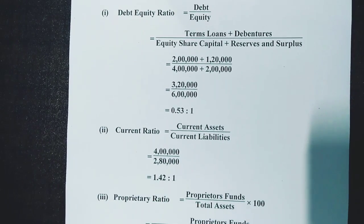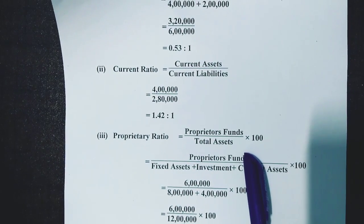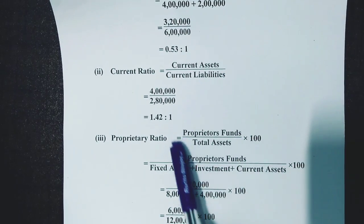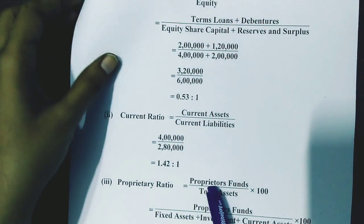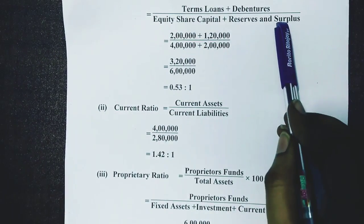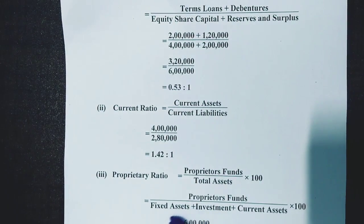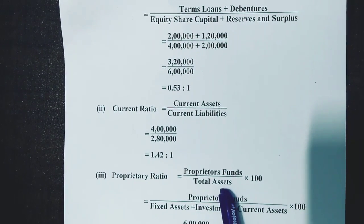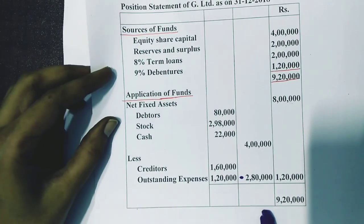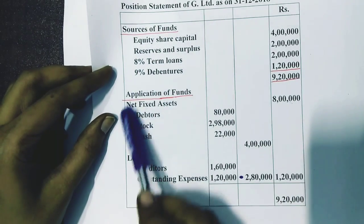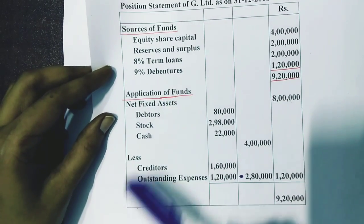The next one is the proprietary ratio. The formula is proprietors' funds divided by total assets into 100 — since it is multiplied by 100, the answer comes as a percentage. Proprietors' funds means whatever you took in the equity part: equity share capital plus reserves and surplus, which totals rupees 6 lakhs. For total assets, there will be fixed assets, investments, and current assets.